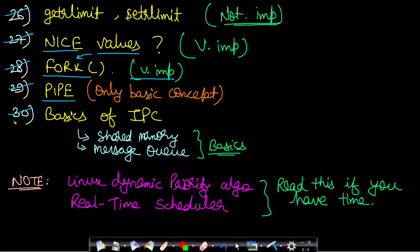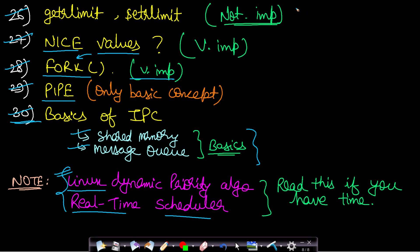For the last part, the basics of IPC is a very important topic — this is about shared memory and message queue type IPCs. After completing all these 30 topics, if you have time you can also read about the Linux dynamic priority algorithm and real-time scheduler. These are all personally filtered questions, but these are the most relevant ones.